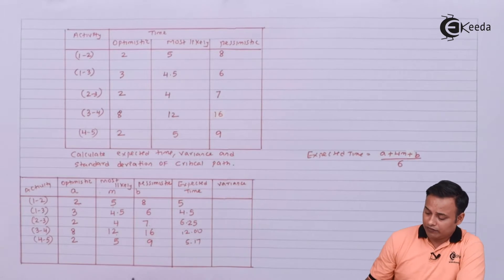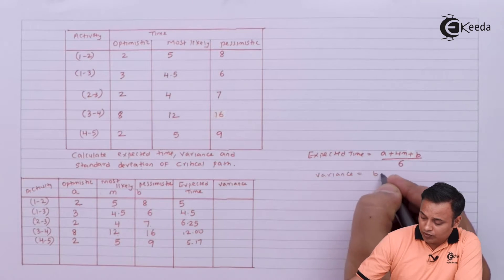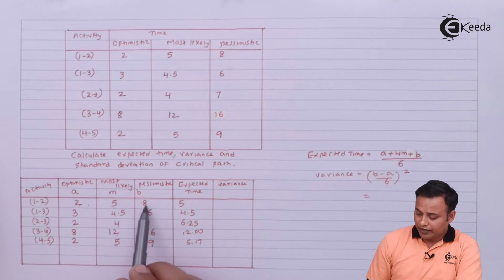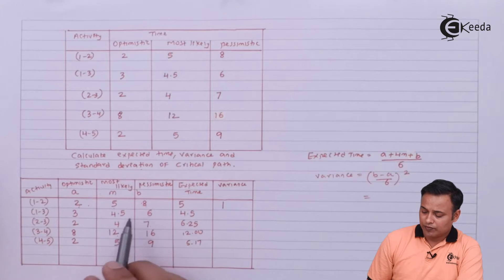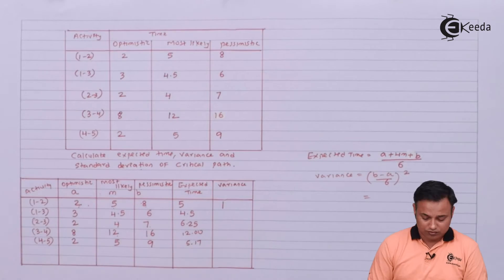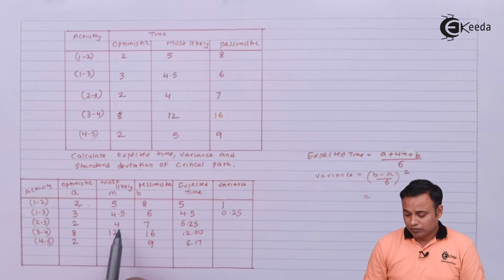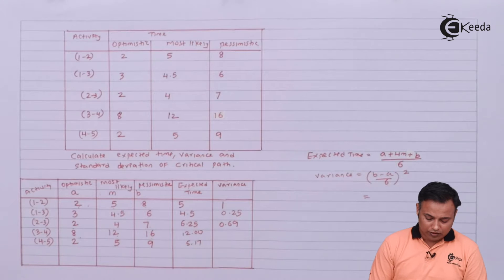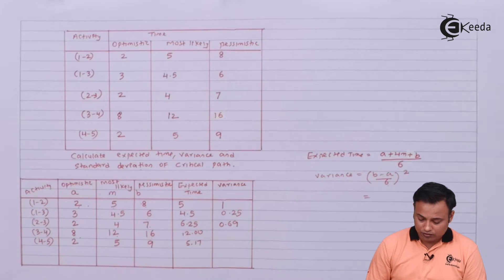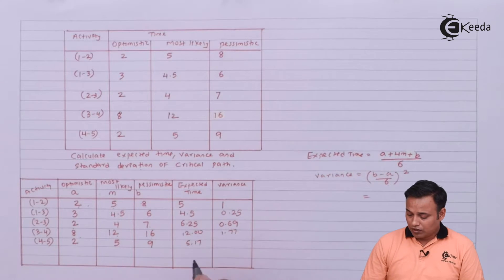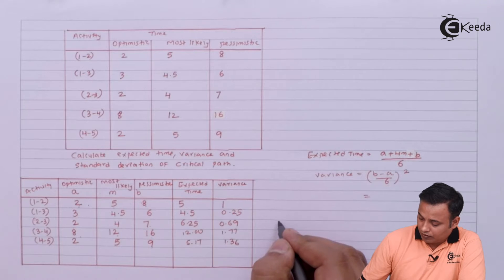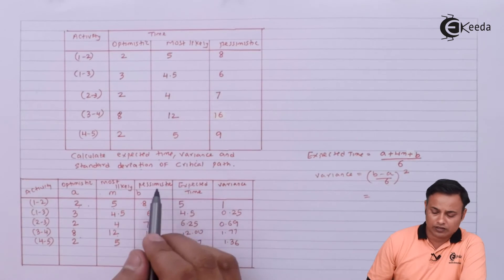Now we calculate the variance for all activities using the formula: Variance = ((b - a) / 6)². Activity 1: (8 - 2) / 6 whole square = 1. Activity 2: (6 - 3) / 6 whole square = 0.25. Activity 3: (7 - 2) / 6 whole square. Activity 4: (16 - 8) / 6 whole square. Activity 5: we also compute its variance. To find standard deviation of the critical path, we first need to draw the network diagram.